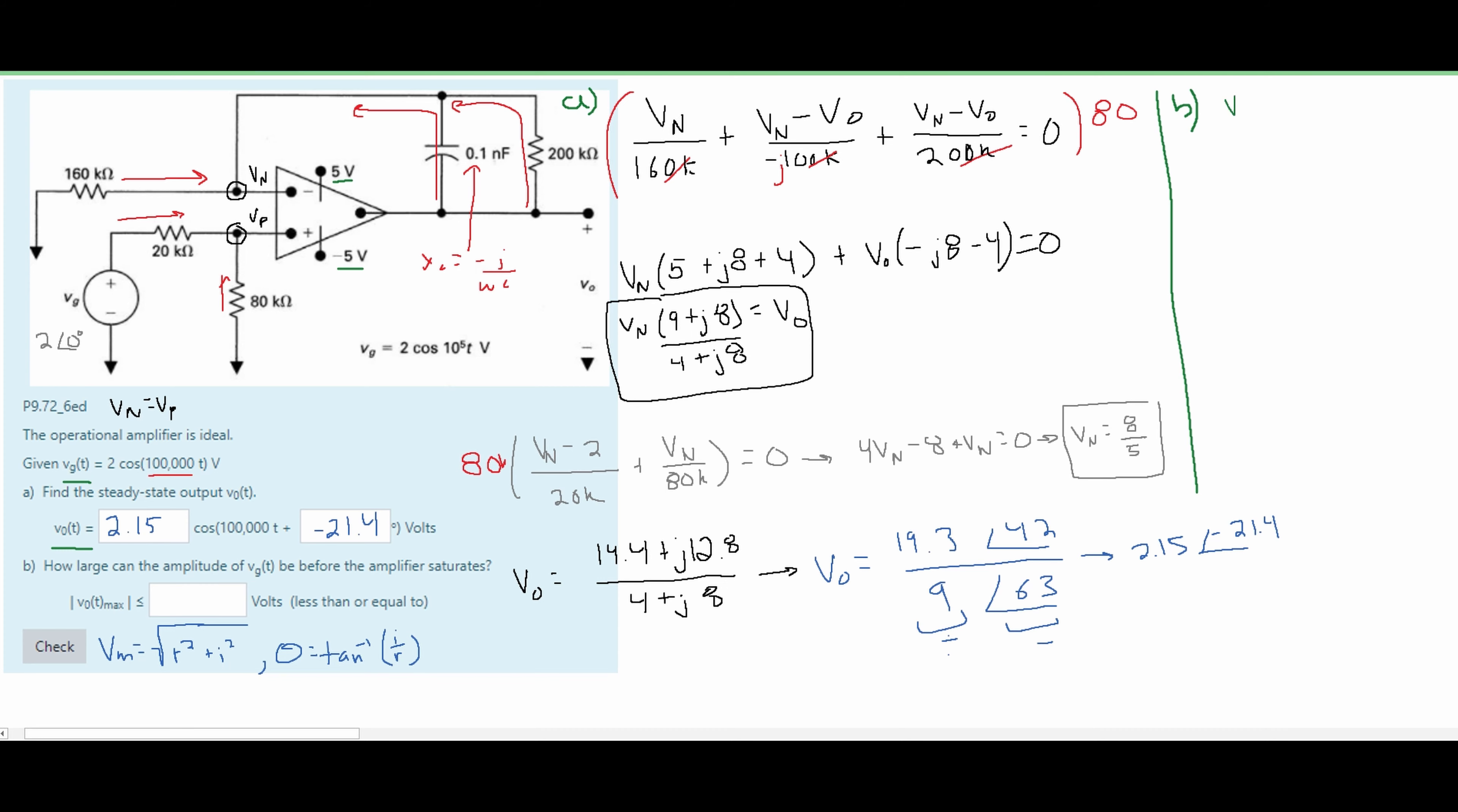We are going to have our VG of T equal to the 2 with an angle of 0 degrees. And then this is going to be over our V0T and this is set equal to what we found it to be which is 2.15 at an angle of negative 21.4 degrees. Now we are going to divide these so we're going to divide the real numbers and then we are going to subtract the denominator angle from our numerator angle.